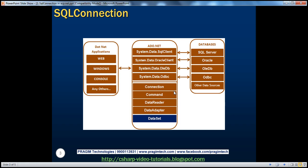If you know how to work with one database, it's very simple to work with others. All you have to do is change the prefix of these objects. The fundamental logic is the same: you create a connection object, prepare a command, execute it, retrieve the results, and then finally close the connection. In the next few sessions, we'll talk about these objects in great detail. In this session, we're going to talk about the SqlConnection object.